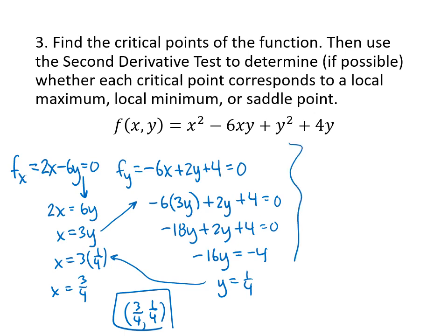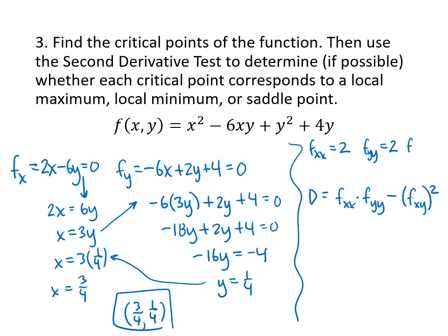But that's not all — now we've got to actually test this critical value. To test it we compute the quantity D: D equals fxx times fyy minus fxy squared. We need the second order partial derivatives. fxx is 2, fyy is also 2, and fxy is negative 6. So D equals 2 times 2 minus (negative 6) squared, which is 4 minus 36, equals negative 32.